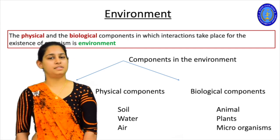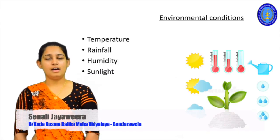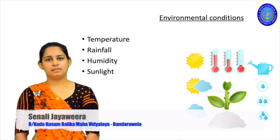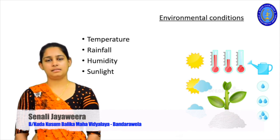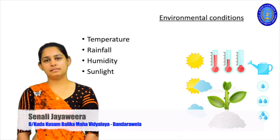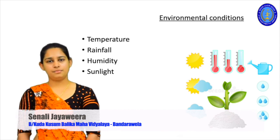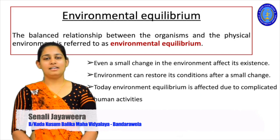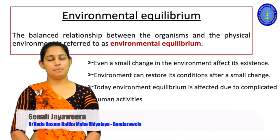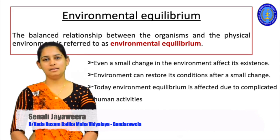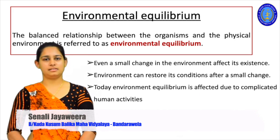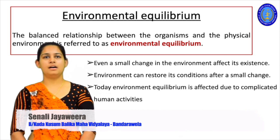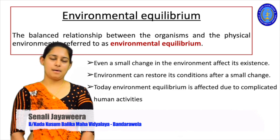In addition to physical and biological components, there are environmental conditions that also affect all the organisms in the environment. Those environmental conditions include temperature, rainfall, humidity, and sunlight. There are different interactions that take place among the physical components, organisms, and environmental conditions, and because of those interactions different types of changes may happen in the environment.